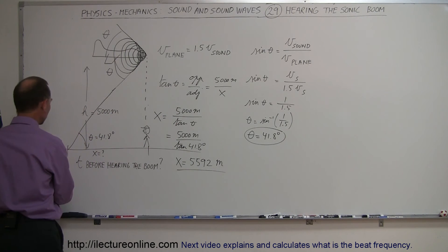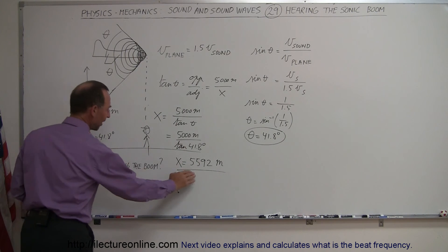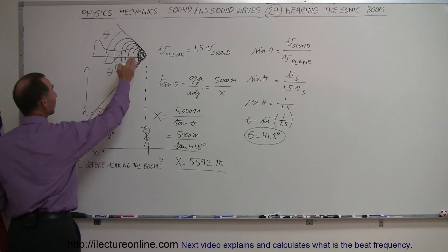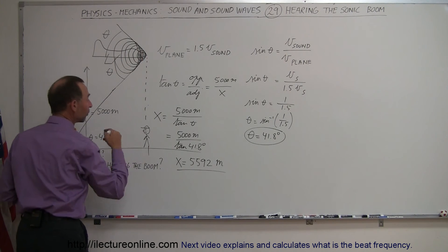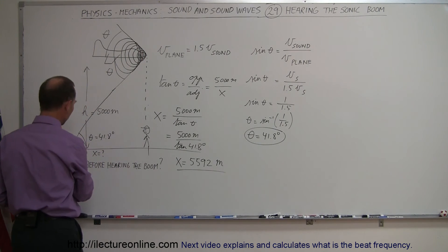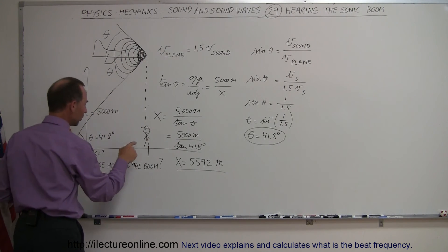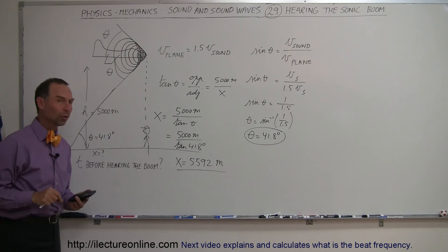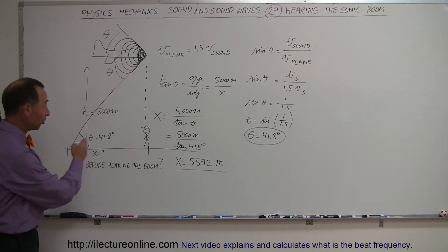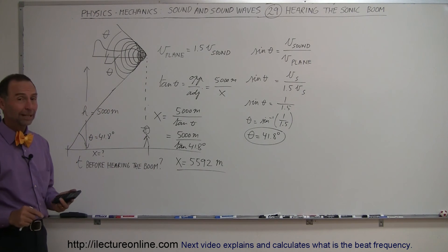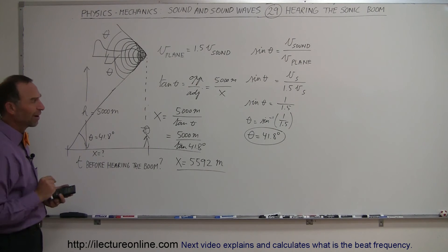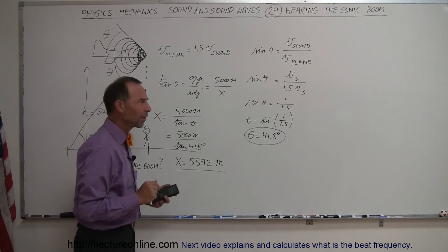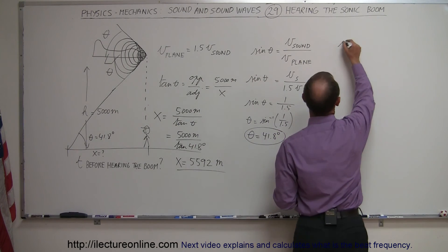So the cone is 5,592 meters away from the observer when the plane is directly overhead. Now how long will it take for this cone of sound to reach the observer? That cone of sound travels just as fast as the plane — 1.5 times the speed of sound — and the speed of sound is about 340 meters per second.